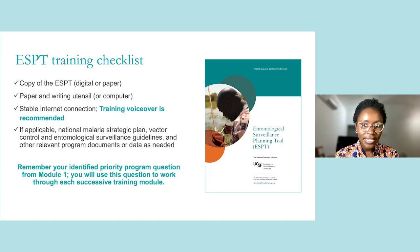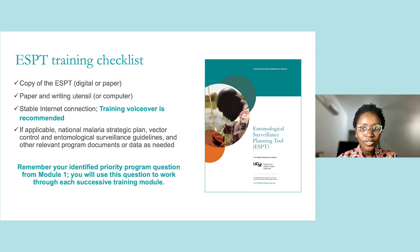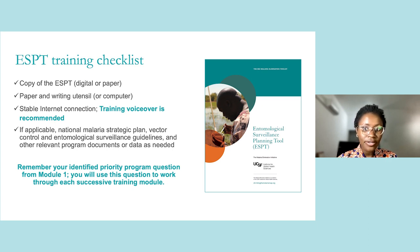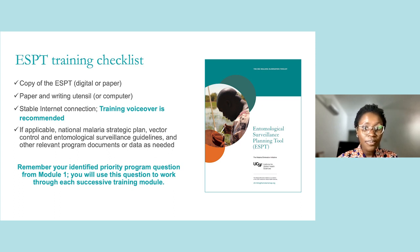Before we dive into the ESPT content, let's make sure you are set up for a successful training session. First, I strongly recommend having a copy of the ESPT tool in front of you, either digital or paper. Second, you will need a notepad and writing utensil or computer to complete exercises and take notes. Third, you will need a stable internet connection and functional speakers or earphones for the audio voiceover. Note that if you are viewing these modules via YouTube, you can turn on subtitles by clicking the closed captioning symbol. Fourth, please have any relevant malaria program documents or data in front of you, such as the National Malaria Strategic Plan, Vector Control and Entomological Surveillance Guidelines, and Annual Operational Plans. In Module 1, I will provide guidance on how to formulate your own priority program question — subsequent module activities refer back to this question, so please remember it.